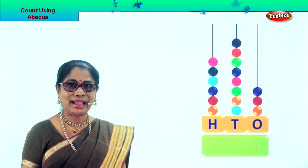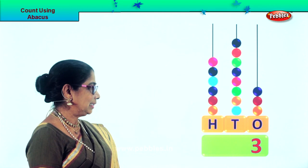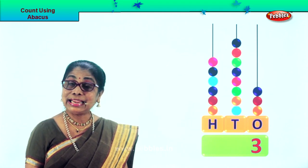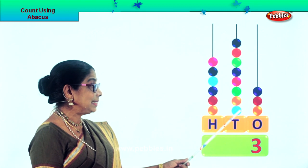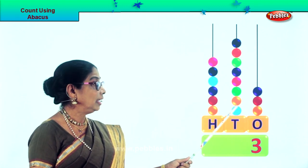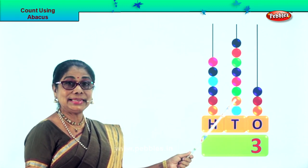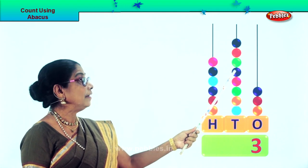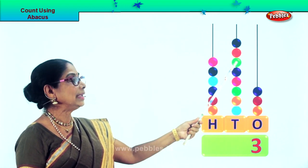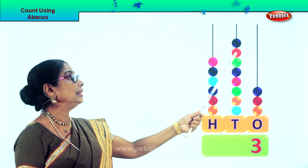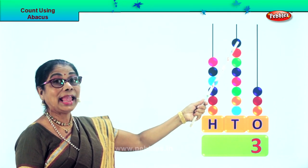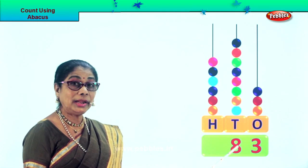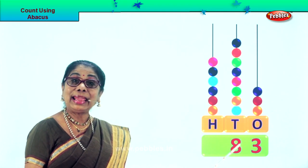So you learn to count the 1s first. Now we go to the 10s place and we count in 10: 10, 20, 30, 40, 50, 60, 70, 80. There are 8 beats, so we put down 8 — that is 80.